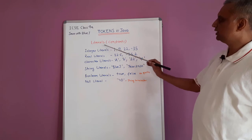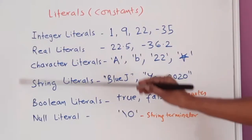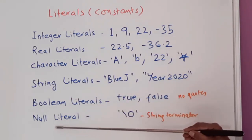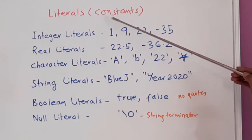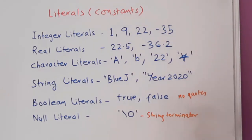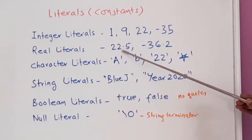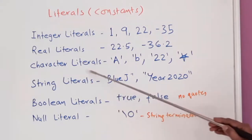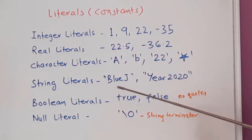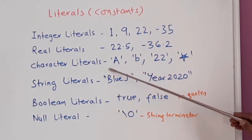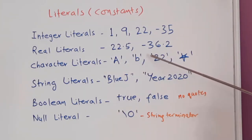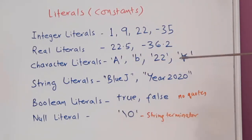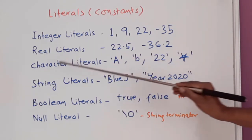Let us see literals or constants as tokens. There are integer literals (e.g., 1, 9, 22, -35 — positive or negative), real literals which use a decimal point (e.g., 22.5, -36.2), character literals written in single quotes (e.g., 'A', 'B' — even a number in single quotes becomes a character literal, not a number), and string literals written in double quotes (e.g., "BlueJ", "Year 2020"). There are also boolean literals — only two: true and false, written without any quotes.